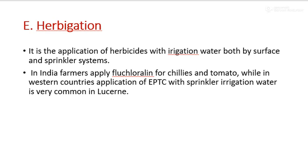Fifth is herbigation — the application of herbicide with irrigation water, both by surface and sprinkler systems. In India, farmers apply fluchloraline for chilies and tomatoes. In western countries, applying EPTC with sprinkler irrigation water is very common in Lucerne.